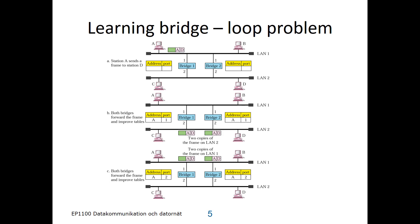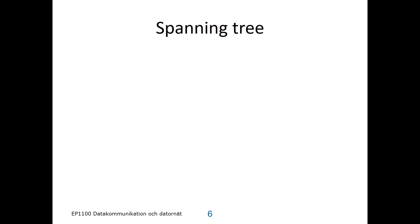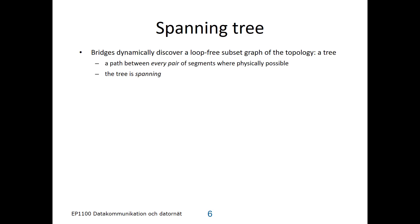We would like to have two bridges perhaps because of reliability, so we need a way to physically disconnect certain parts of the bridges so that we can have a network without any loops — for instance by disconnecting port 1 on bridge 2. We need a protocol to run among the bridges that detects loops and disables ports so that we end up with a graph that has no loops. We will introduce an algorithm that runs on the bridges allowing them to dynamically discover a loop-free subset graph of the topology, namely a tree. It allows a path between every pair of LAN segments which are physically possible, meaning the tree is spanning.